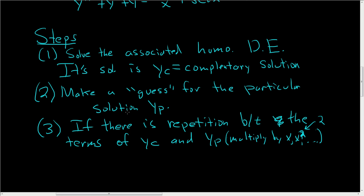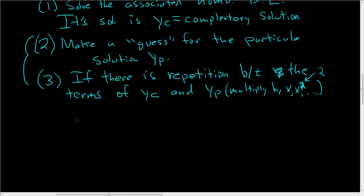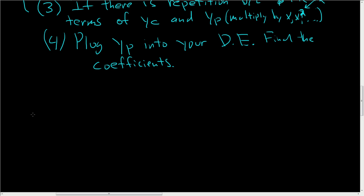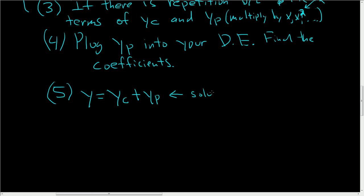Once you get past the second and third steps, it becomes pretty easy. The fourth step is you plug y_p into your differential equation and find the constants — the coefficients. The fifth step is to write the answer down. The solution to the differential equation is your complementary solution plus your particular solution. This is your final solution.